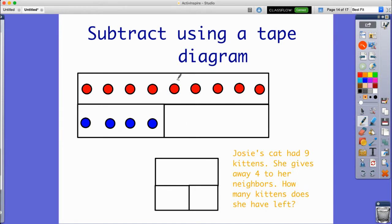Here I have a tape diagram. It can also be a part-part-whole model. This one just uses counters. So I'm going to count these to make sure that I know what these represent. I'm going to count all my reds first. One, two, three, four, five, six, seven, eight, nine. This has to represent the nine kittens that Josie's cat had.